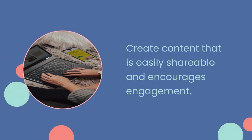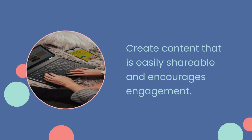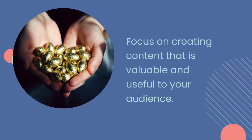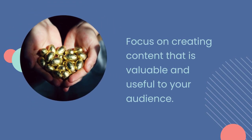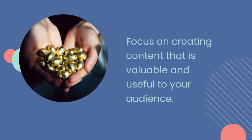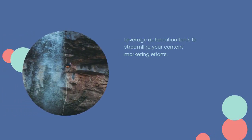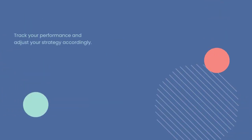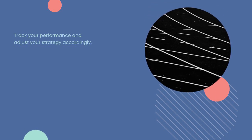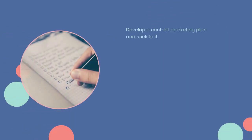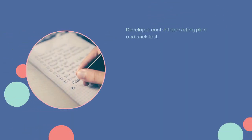Create content that is easily shareable and encourages engagement. Focus on creating content that is valuable and useful to your audience. Leverage automation tools to streamline your content marketing efforts. Track your performance and adjust your strategy accordingly. Develop a content marketing plan and stick to it.